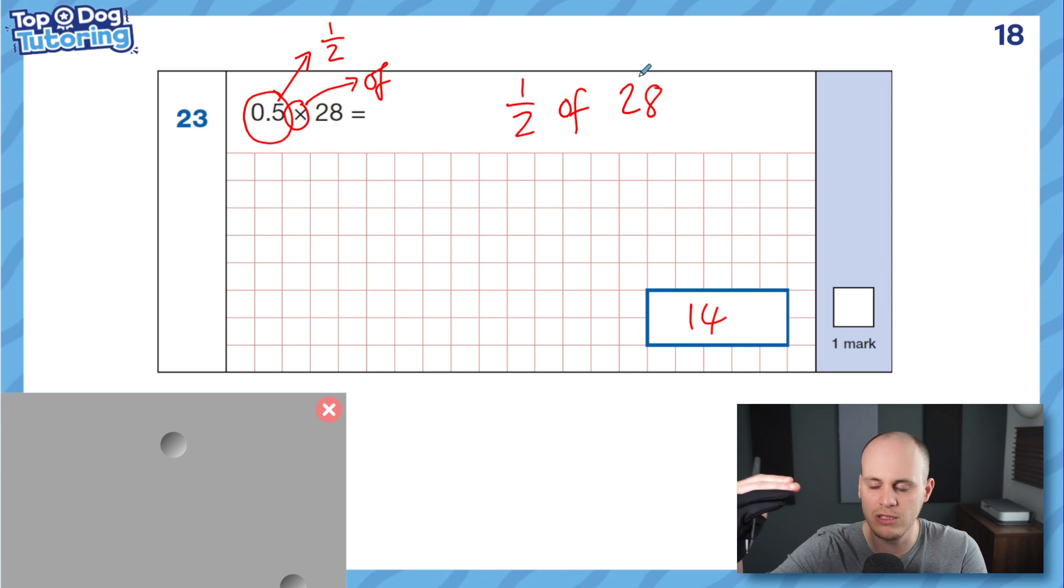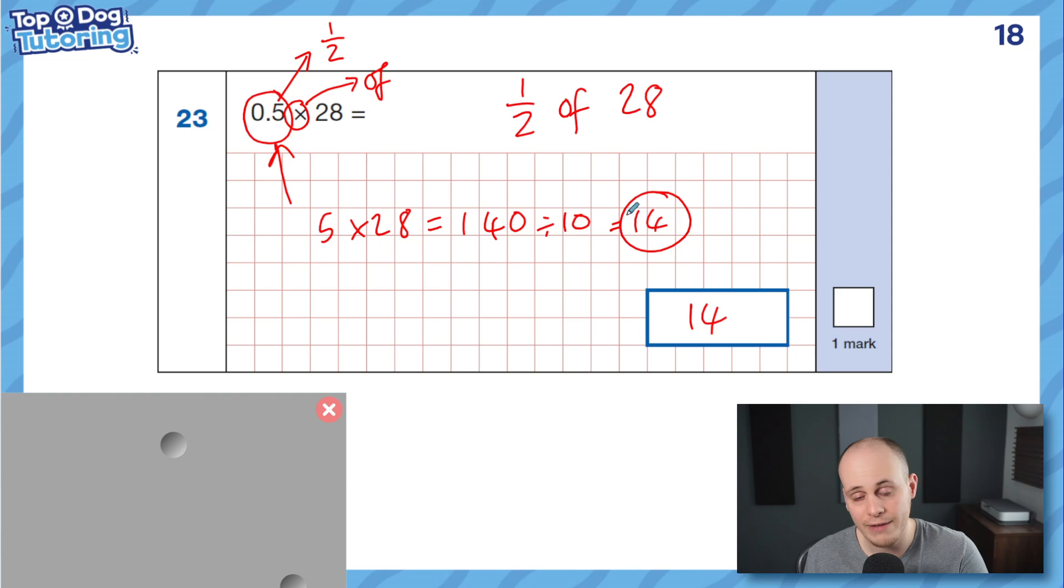So this is an advanced thing. You don't need to do this. But if you're looking to be just that next level of mathematician, and be the best that you can be, then it's worth understanding this, that if you have a decimal like 0.5, and you happen to know what its equivalence is as a fraction, you could turn this into a fraction of amounts question. This just says half of 28. It's the same as doing 5 times 28, which is 140, and then dividing it by 10 to balance out the fact that you made 0.5 into 5. And hey, presto, you get 14 in the end. But this child did it in two seconds.